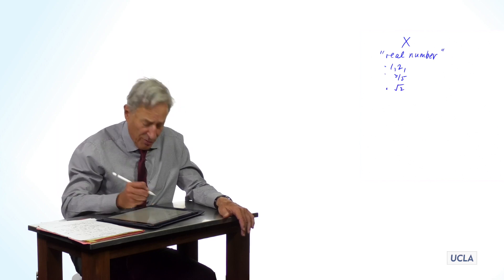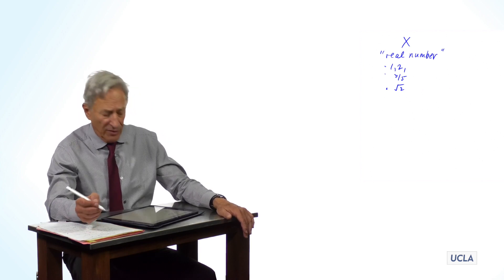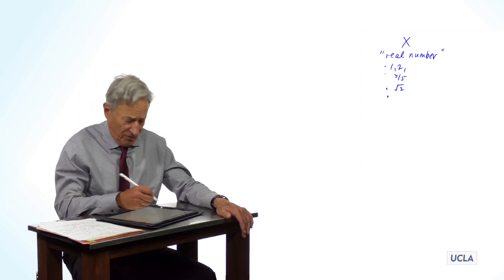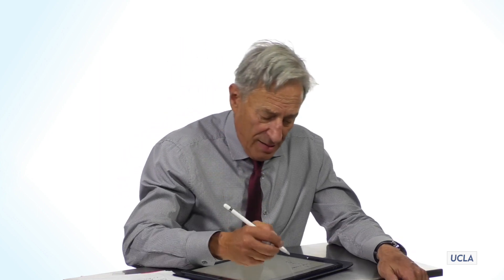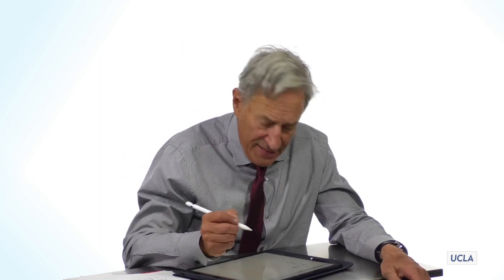Algebraic numbers, like the square root of 2, are also real numbers. Transcendental numbers, like pi, are also real numbers. In fact, everything you can think of is a real number.